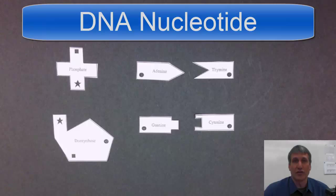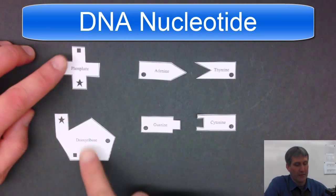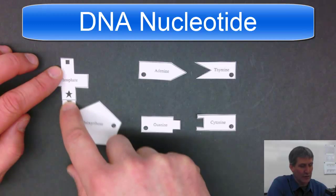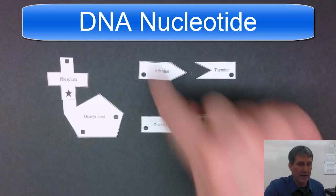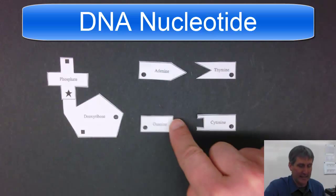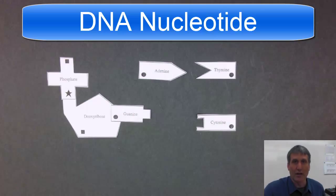So let's look at the structure of a DNA nucleotide. The phosphate is attached to the deoxyribose sugar, and then one of the four bases is attached to the sugar as well.